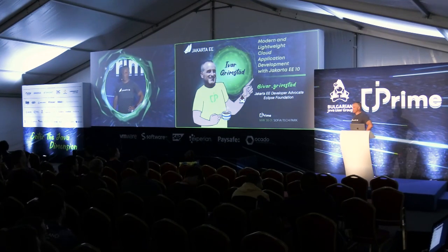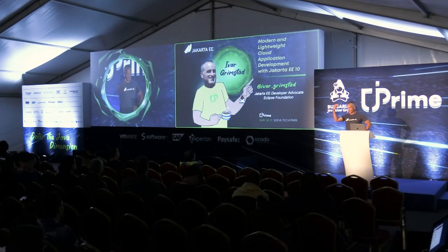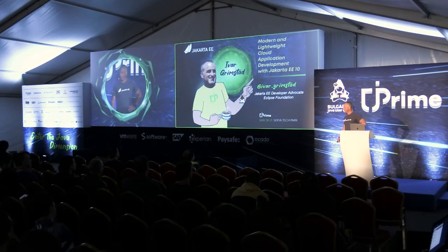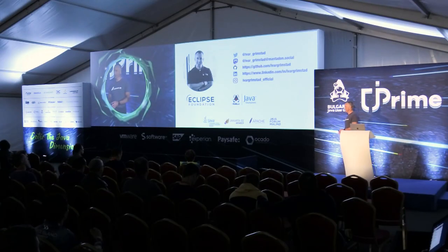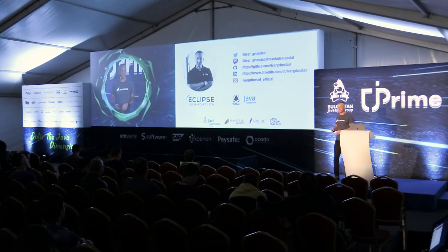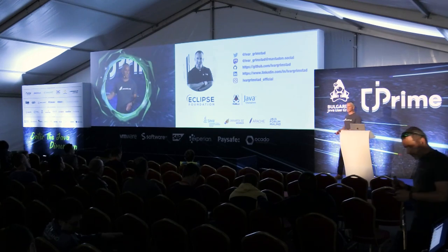Thank you very much for coming and going through the rain to get here. My name is Ivar Grimstedt. I'm the Jakarta developer advocate at Eclipse Foundation. I'm also a Java Champion, in the Java Community Process, in the Apache Software Foundation, and I run a JUG in Malmö, Sweden. These are my credentials on social media, so feel free to engage there.